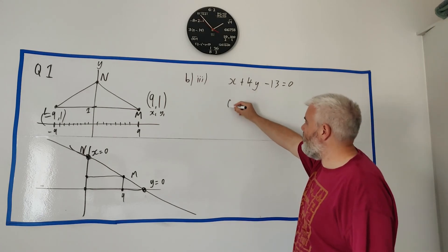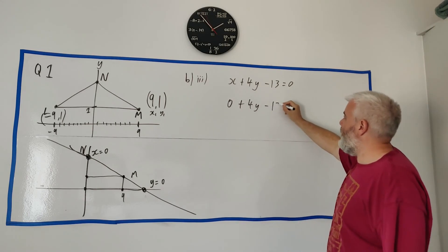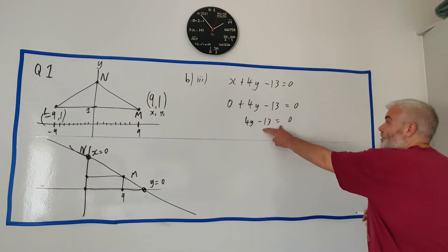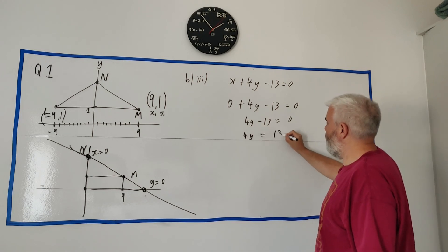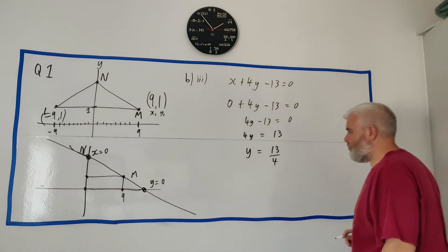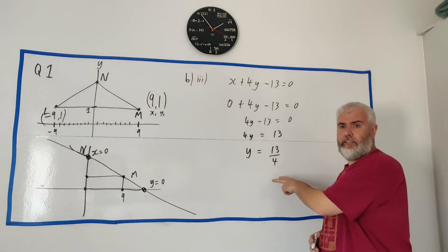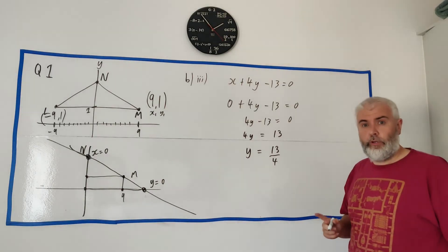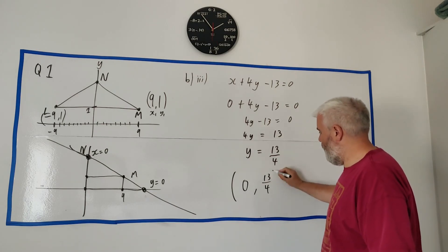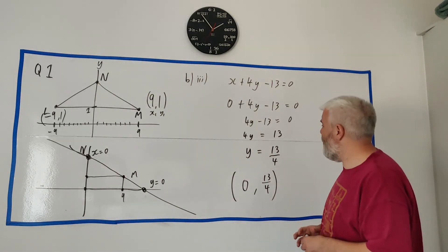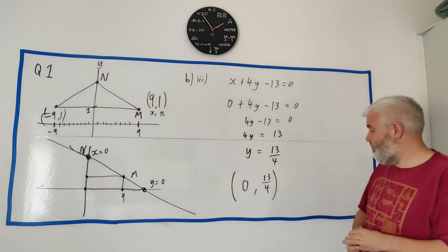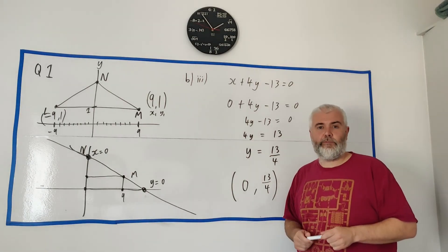So substitute x = 0 into the equation: 0 + 4y - 13 = 0. That gives 4y - 13 = 0, so 4y = 13, therefore y = 13/4. That's nearly your full answer, but don't just write y = 13/4 — they asked for a point, so give them the full coordinate: N = (0, 13/4). So many students find x or y and forget to state the point. I hope that helped — if you have any questions put them in the comments below. Have a great day!